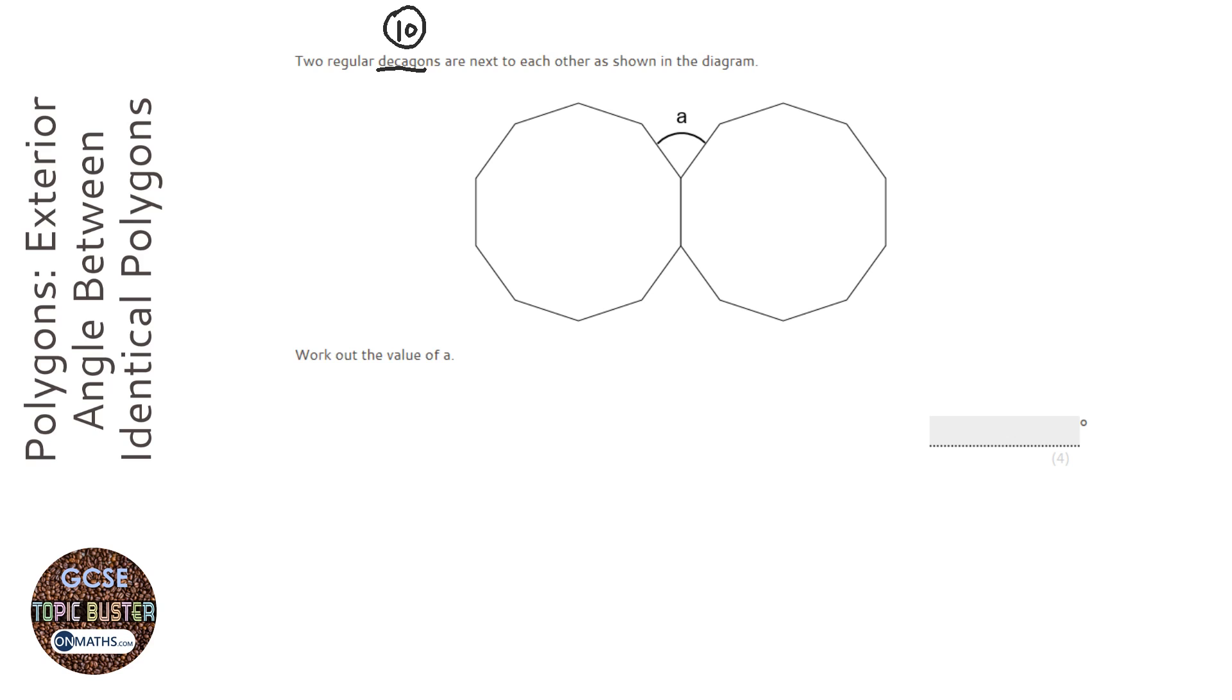Now, what we can do is work out the interior angles of the decagons. They'll be the same, so I can just work out one and then double it, and then take that away from 360 to work out A. That's absolutely fine, that'll get you the right answer.